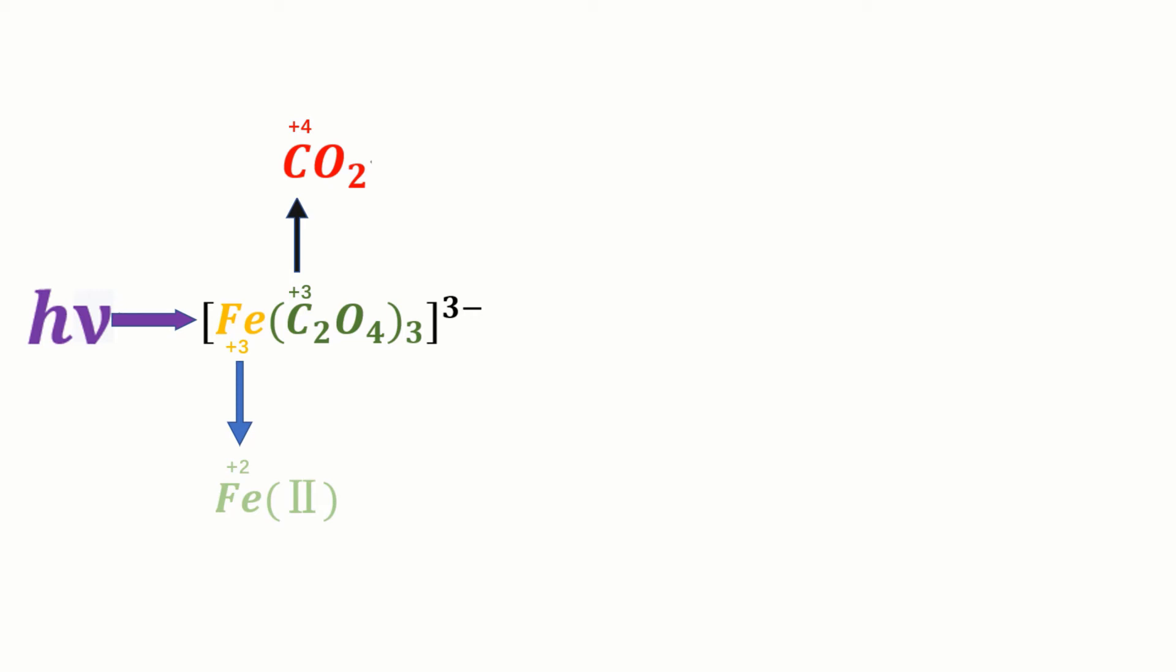Then the free iron two particles meet the potassium ferricyanide and settle down as Turnbull blue on the surface of paper. Since this reaction is activated by light, only the area which is not covered by the negative will react. This is how this technology can form an image.